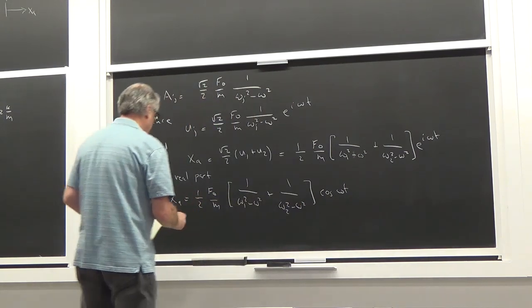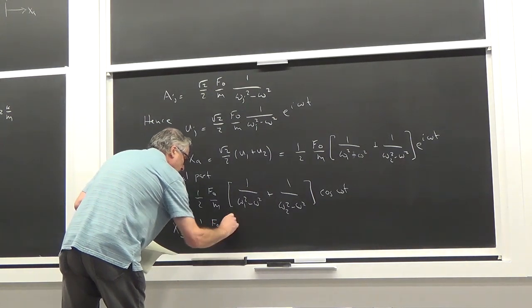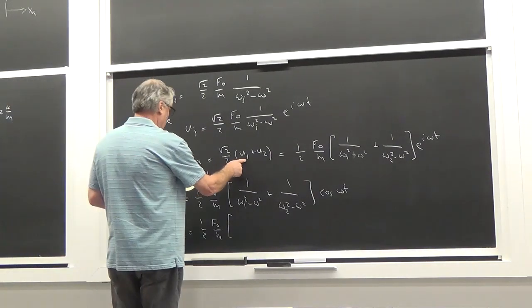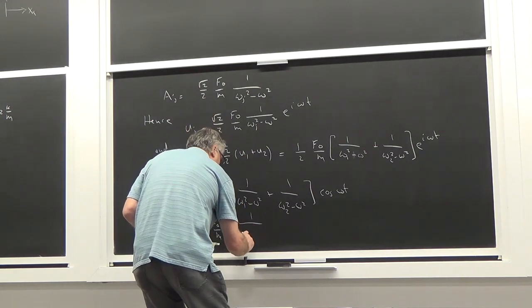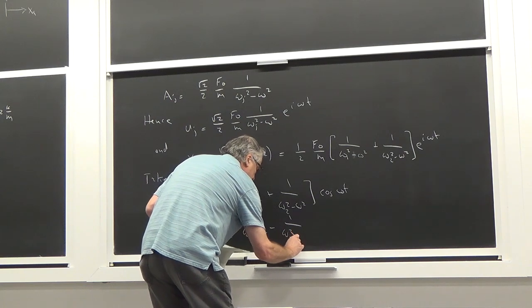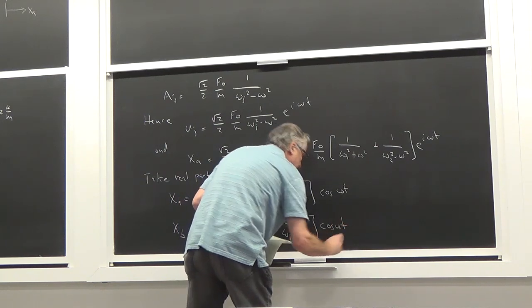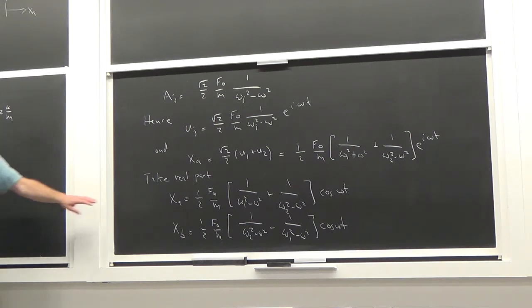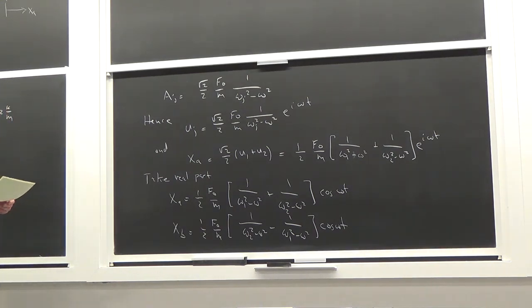Taking the real part, x_a can be written out, and likewise x_b — x_b gets a (√2/2) factor with a sign difference, giving 1/(omega_2^2 − omega^2) minus 1/(omega_1^2 − omega^2). This is the forced-motion solution for masses A and B, not including the homogeneous solution.